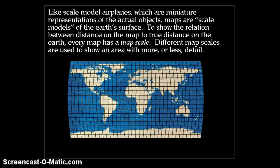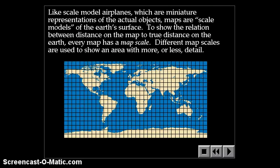Like scale model airplanes, which are miniature representations of the actual objects, maps are scale models of the Earth's surface. To show the relation between distance on a map and true distance on the Earth, every map has a map scale. Different map scales are used to show an area with more or less detail.